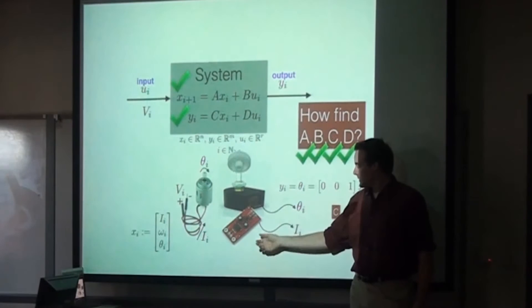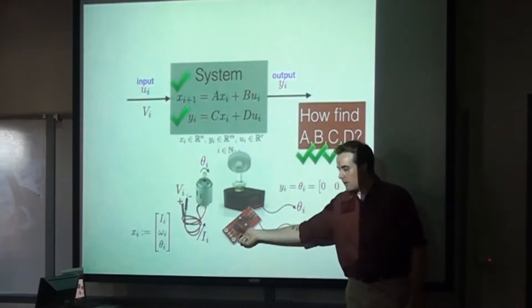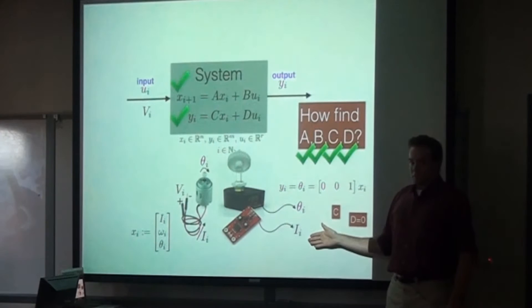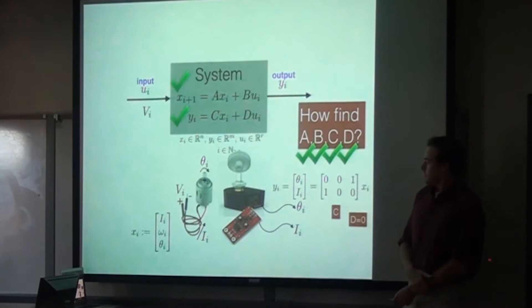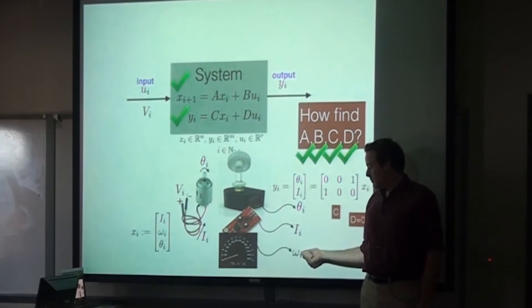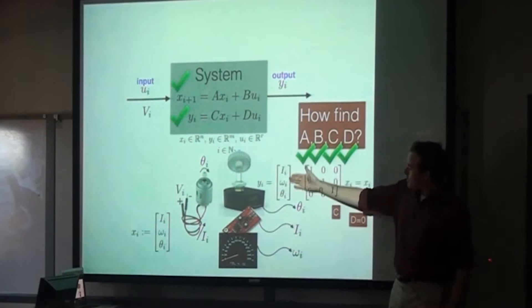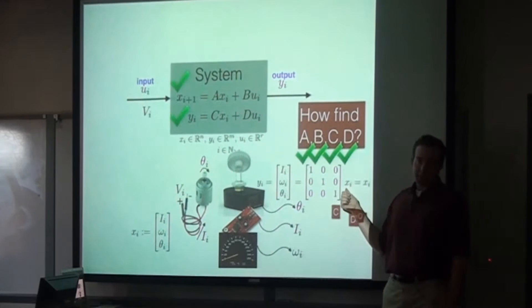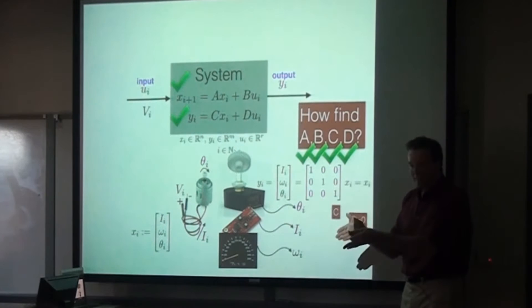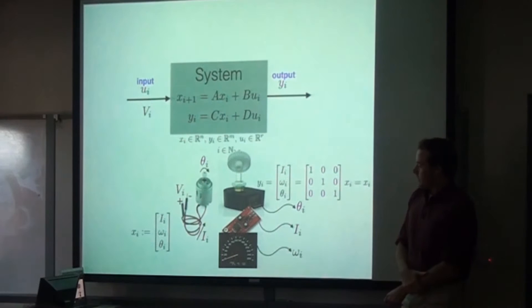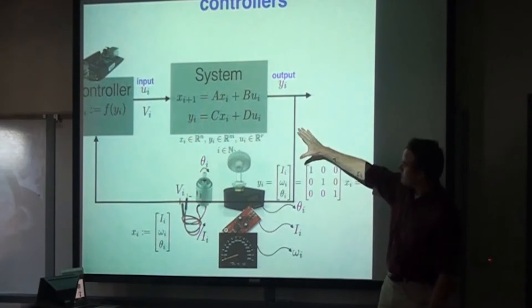If you had another sensor — say a current sensor, which you put in series with the motor and read the current via a Hall effect sensor — then you have two sensors. Now your measurement equation has both theta and current, so you have a different C matrix. If you also had another sensor measuring the angular velocity, then you are actually measuring all three states. Your output of the system is just the state xi — this is a very happy situation where you have a sensor for every state, full knowledge, you get to look right into that system and know everything.